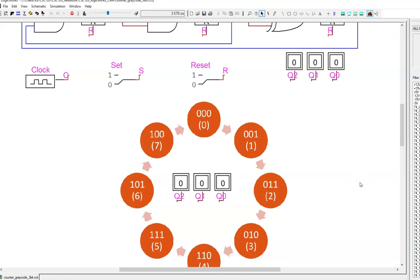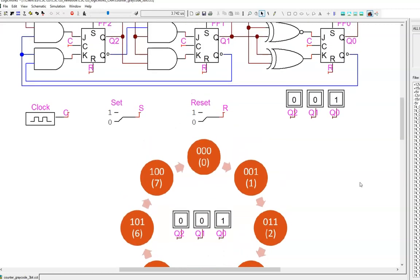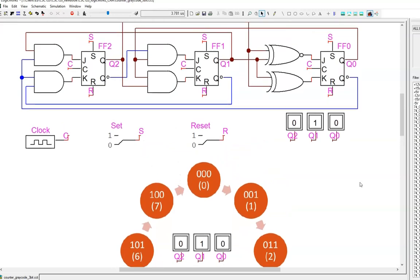The design process shown here can be used to make a synchronous counter that follows any sequence. You can count in binary, count in gray code, cycle through a set of prime numbers, cycle through the numbers of your crush's birthday, any sequence. There is one little caveat, though.